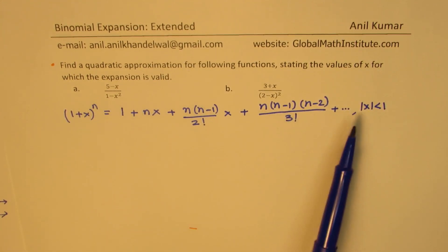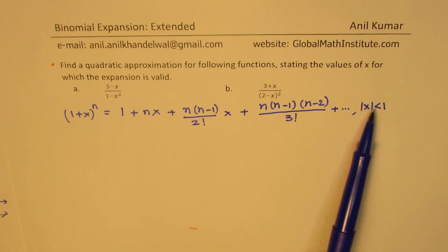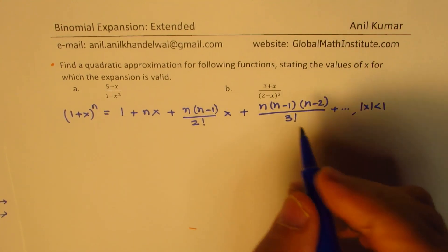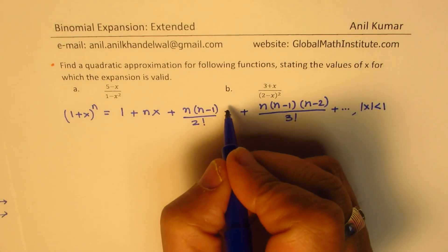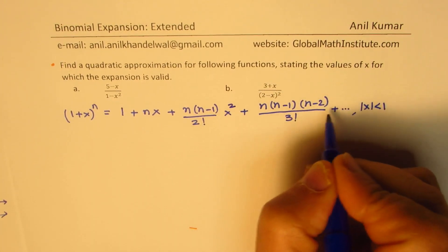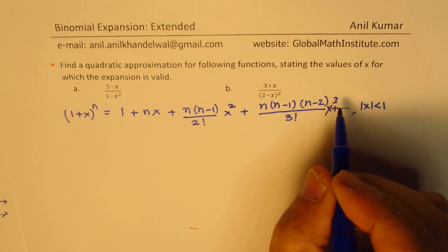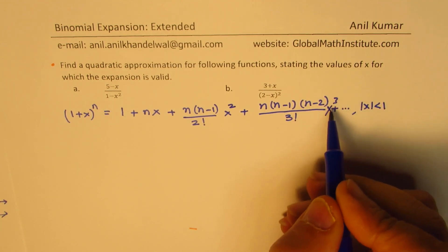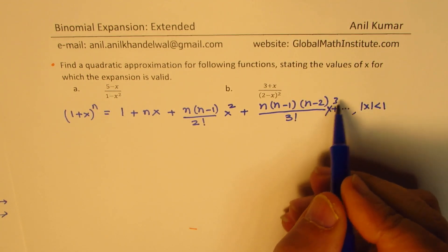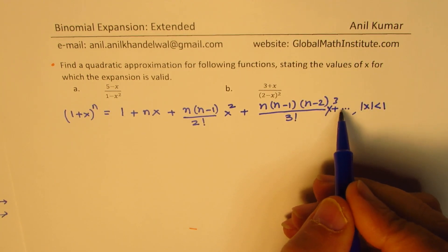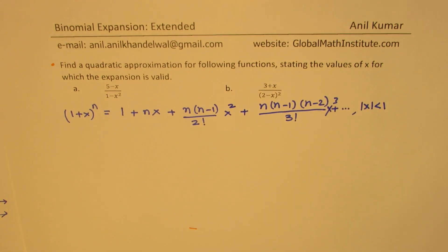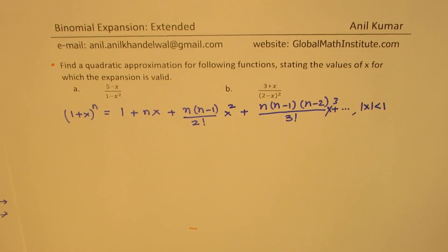If the absolute value of x is less than 1, then the higher powers — x squared, x cubed — will be much, much smaller and can be neglected. That is the whole idea. Keeping that in mind, let us work on the first rational expression.